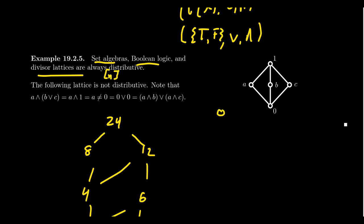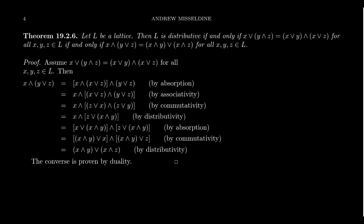Another example is the following five-point lattice — this is actually the smallest example of a non-distributive lattice. I'll leave it as an exercise to prove that it is non-distributive by finding an example where the left-hand side of one of the distributive laws doesn't agree with the right-hand side.